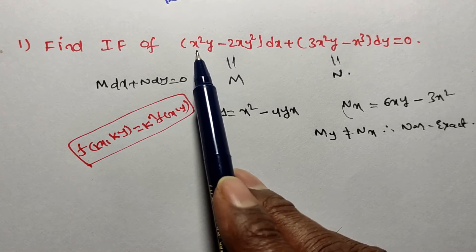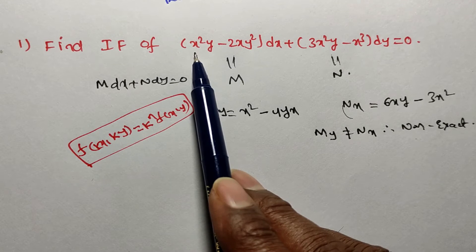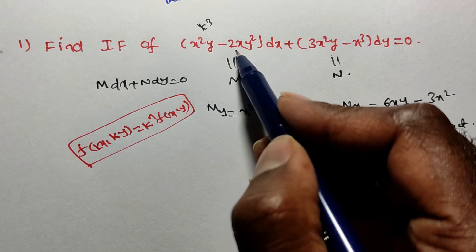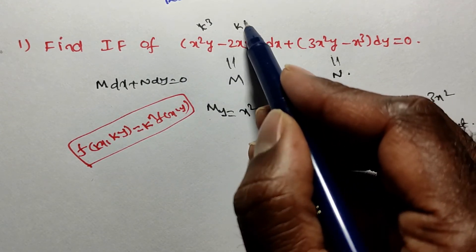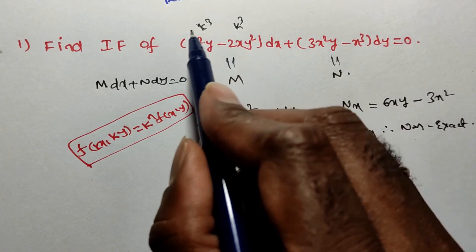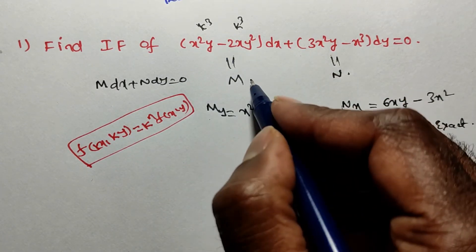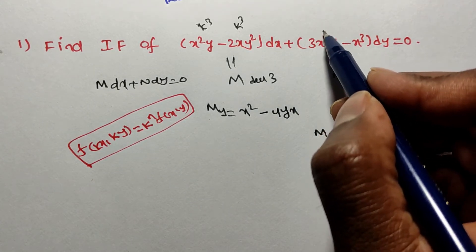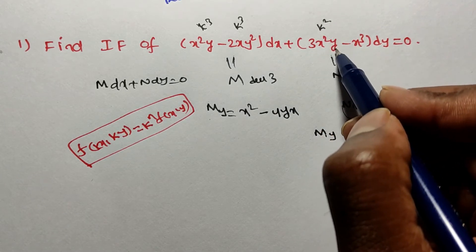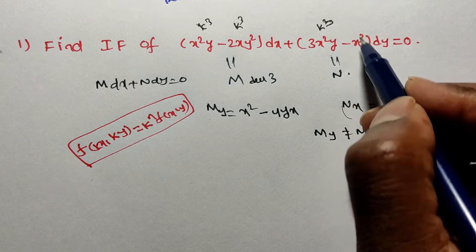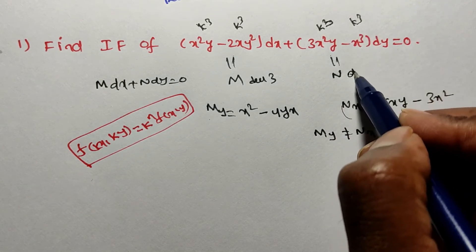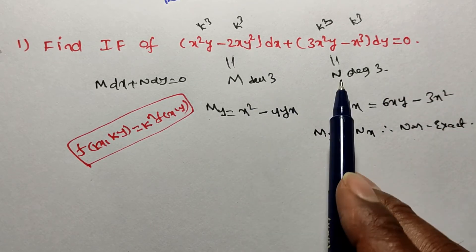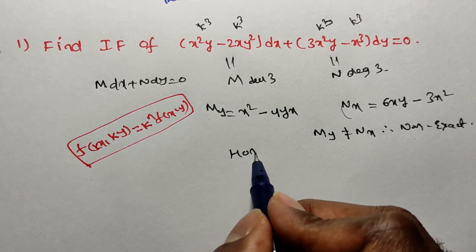Here M contains x squared y: substituting kx and ky gives k squared times k, which is k cubed. For the term 2xy squared, we get k times k squared equals k cubed. So degree of M is 3. For N, x squared y gives k squared times k equals k cubed, and x cubed gives k cubed. So degree of N is 3. Since M and N both have the same degree, the given differential equation is homogeneous.